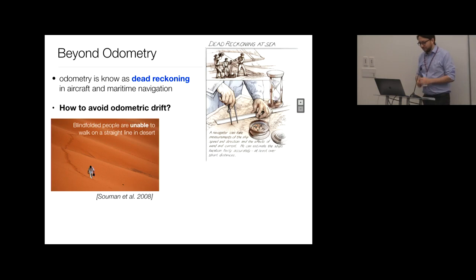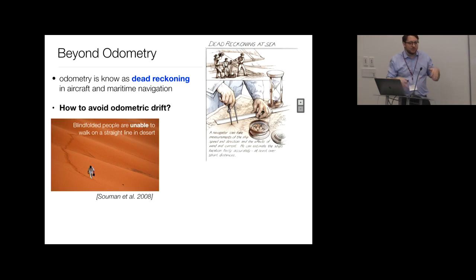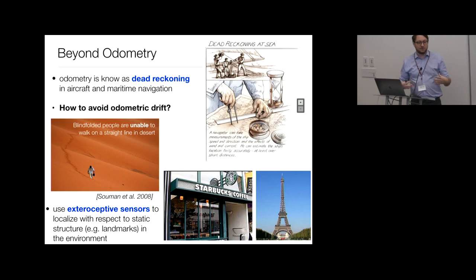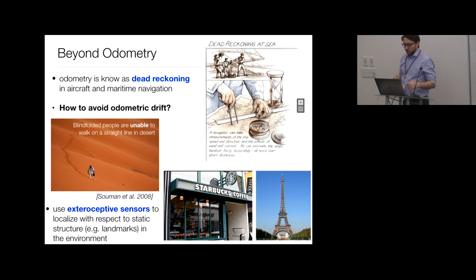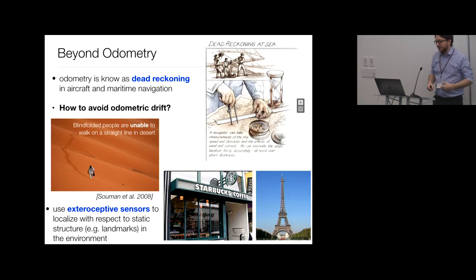Purely proprioceptive odometry will drift over time. The best thing we can do is include more information. The basic intuition behind SLAM is that we must use exteroceptive sensors to localize the robot with respect to external structure — external landmarks in the environment. Combining proprioceptive sensor data (your estimate of own motion) with exteroceptive sensor data (information about the external world) should allow you to bound error accumulation.